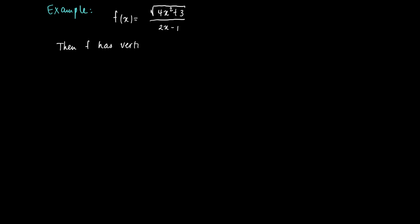First, consider the vertical asymptotes. Clearly, there can only be a vertical asymptote for x = 1/2.